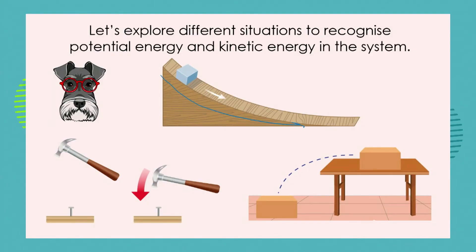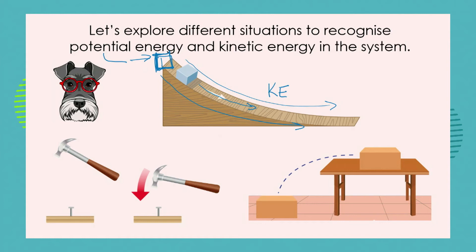Imagine we have a ramp and we have a little box and we put it at the top of the ramp. The box is not moving, but it has the potential to slide down the ramp. At the top of the ramp, we say that it has potential energy — EP. While it is moving, we say it has kinetic energy — EK. So now you know exactly how to abbreviate these terms.